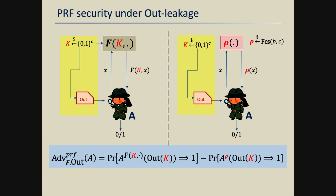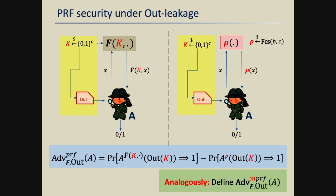We can define a corresponding advantage, and also extend the notion naturally to the multi-user setting by having multiple instances. Note that despite the name, this is much simpler than the traditional notion of leakage-resilient PRF, because we really have one fixed, a priori-fixed function under which we get leakage, and that's it — no arbitrary polynomial time function or anything like that.